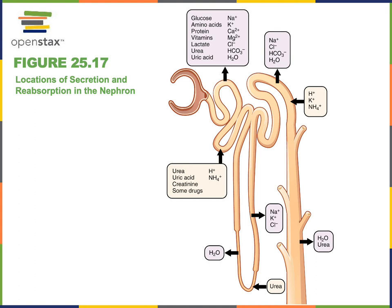Finally, the distal convoluted tubule and collecting duct provide the final step of reabsorption, regulating the composition of the urine by reabsorbing sodium chloride and water in variable amounts in response to hormonal controls. While the proximal convoluted tubule constantly reabsorbs large amounts, the distal convoluted tubule and collecting duct can reabsorb large amounts of water if we are dehydrated, in response to antidiuretic hormone, or large amounts of sodium in response to aldosterone when there is a low sodium level or low blood pressure in the blood. That sodium reabsorption also drives water reabsorption by osmosis, leading to increased blood volume and increased blood pressure.